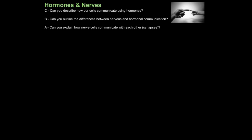In today's tutorial, we're going to look at how our body communicates using hormones and nerves. The first aim is can you simply describe how cells communicate using hormones? Then can you outline the differences between nervous and hormonal communication? And can you explain how nerve cells communicate with each other through synapses? I just want to remind you at this stage that this only indicates relative difficulty. These could all appear in the foundation paper.